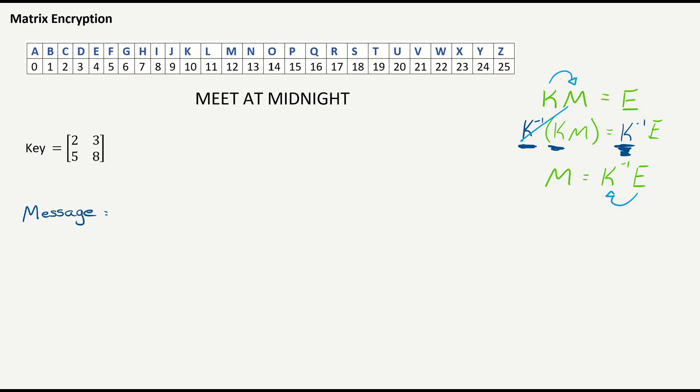I have our message meet at midnight that we're supposed to send in an encrypted manner. I'm going to take each of my letters of meet at midnight and transpose them into numbers. So we go 12, 4, 4, 19, 0, 19, 12, 8, 3, 13, 8, 6, 7, 19. So there we have it in numbers.